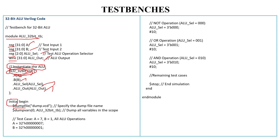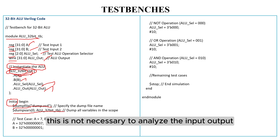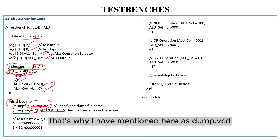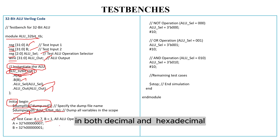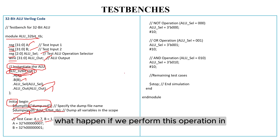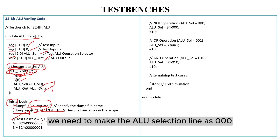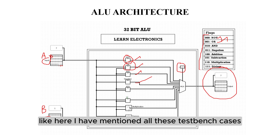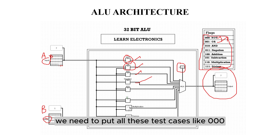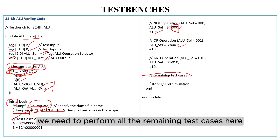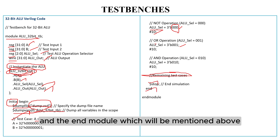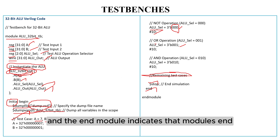Next, we need to add the initial block and begin. To analyze the input-output waveform, we need to dump these as a VCD file — that's why I have mentioned dumpfile VCD. I have set the test case with A equal to 7 and B equal to 1. This is in hexadecimal format, so we need to convert decimal to hexadecimal. The value 7 will be 7 in both, and 1 will be 1. We need to put all test bench cases: first 0, 0, 0, then after 10 ns delay perform 0, 0, 1, and continue for all remaining test cases. At the end, we need to stop the simulation. The initial block is ended and endmodule indicates the module end.